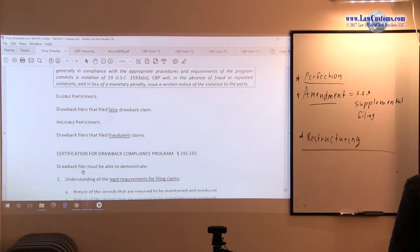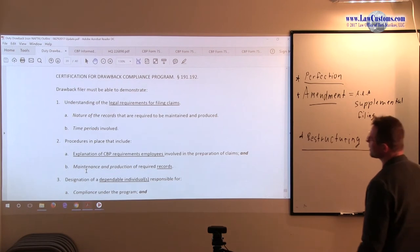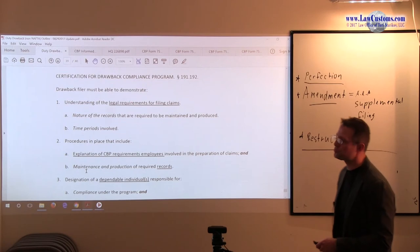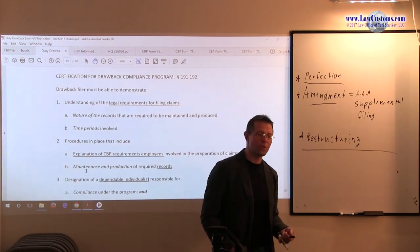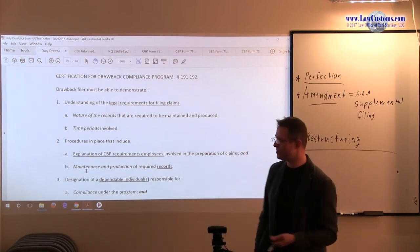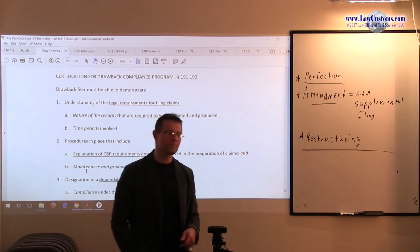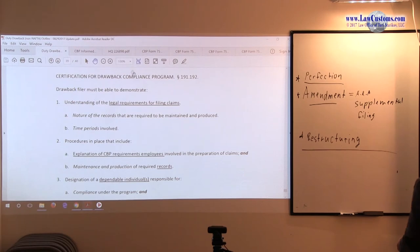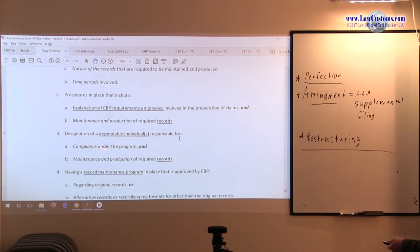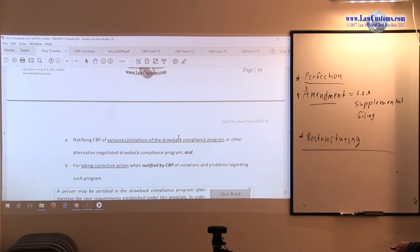Alright, so, who is eligible? The guys who made false statements but that did not amount to the fraud. So, it amounted to the negligence. How do you get qualified, right? Well, you have to be able to demonstrate certain level of preparedness or, at least, the ability that you can survive that compliance program, if you will. And, there is a bullet point list. So, this laundry list of items. You can see that customers will likely test you on that laundry list of items. So, it is helpful to take note of this. So, drawback filer must demonstrate legal requirements for filing claims, knowledge of procedures, individuals who are dependable, they must have some kind of record keeping program and reporting procedures to CBP. Alright.